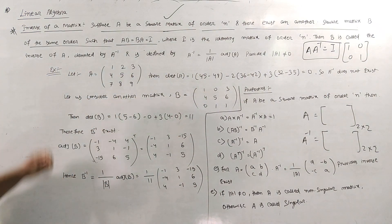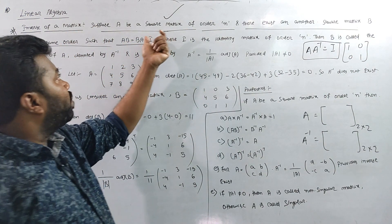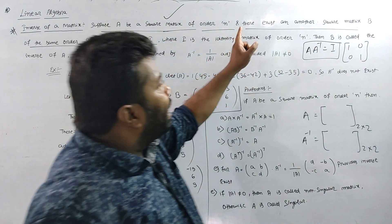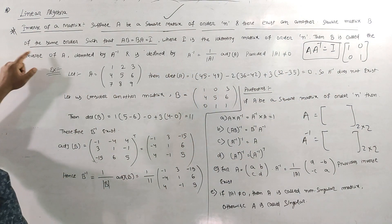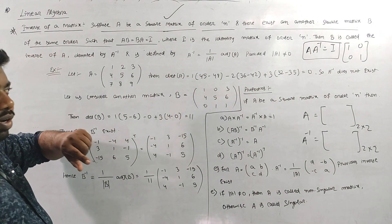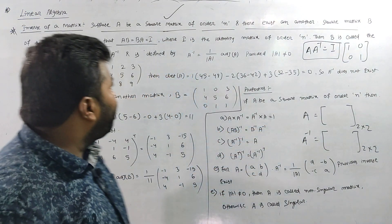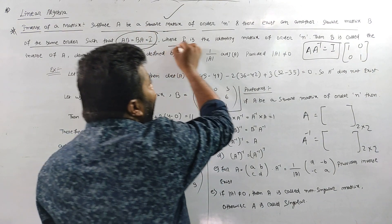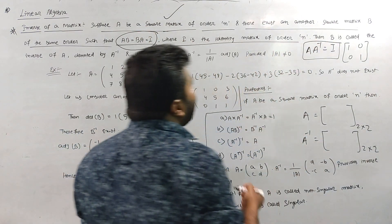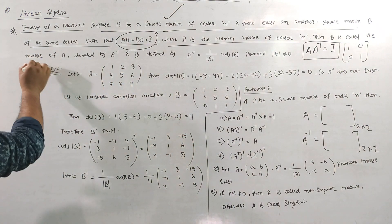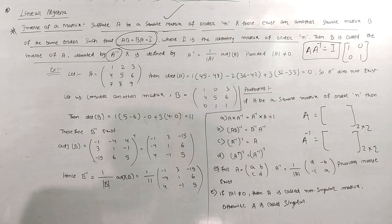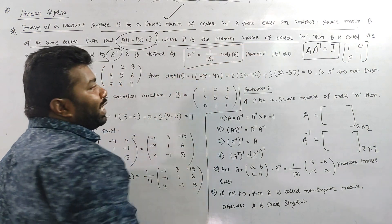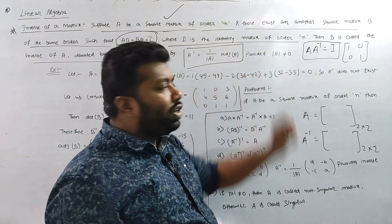The inverse of the matrix is a square matrix. Because A is a square matrix of order N, there is another square matrix B of the same order such that A times B equals B times A equals I, the identity matrix of order N. A inverse is denoted and defined as A inverse equals adjoint A divided by mod A, provided mod A is not equal to zero.